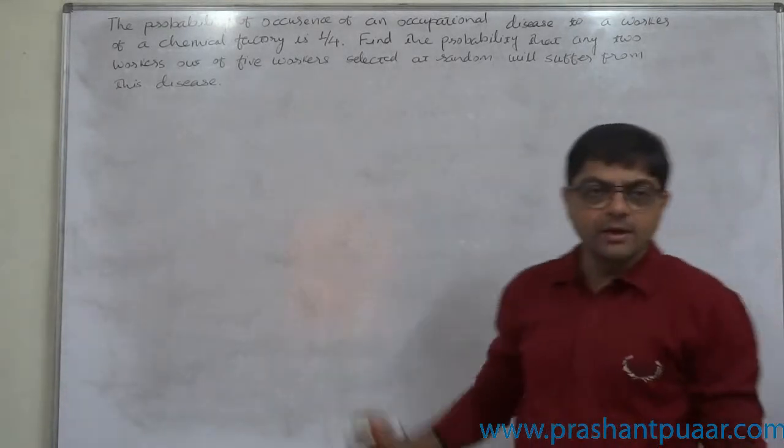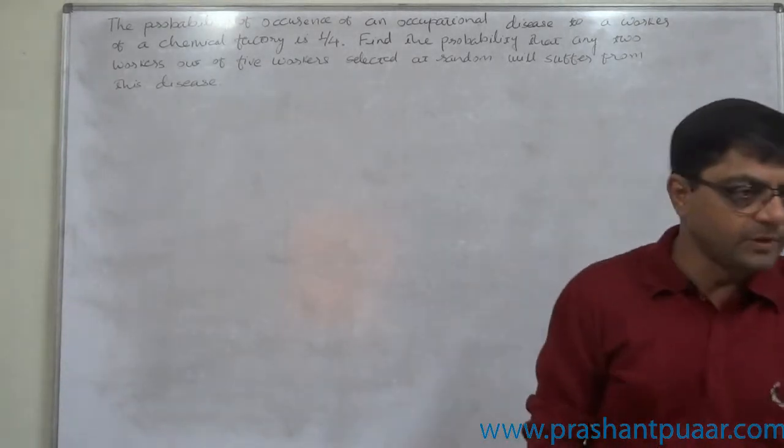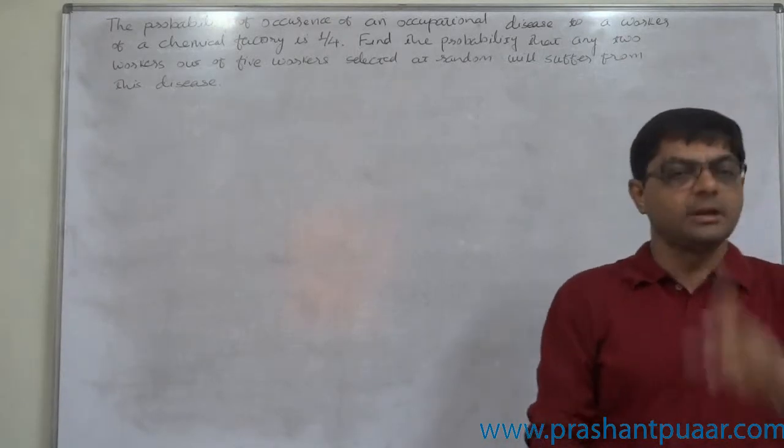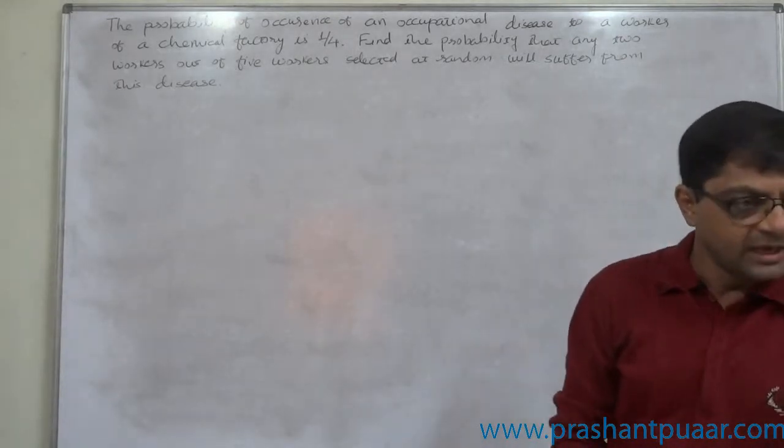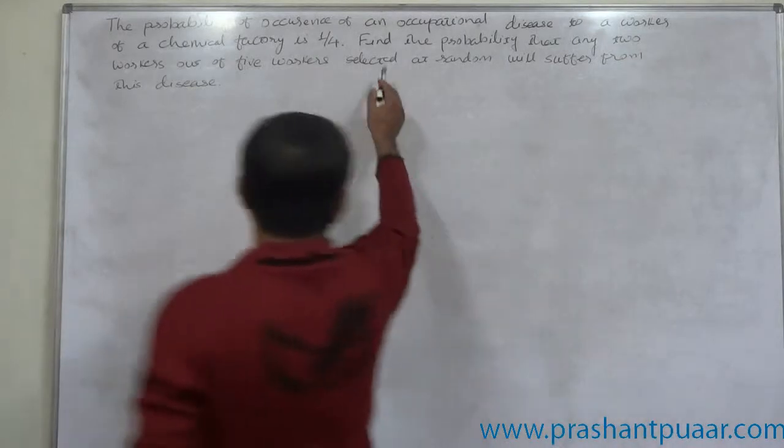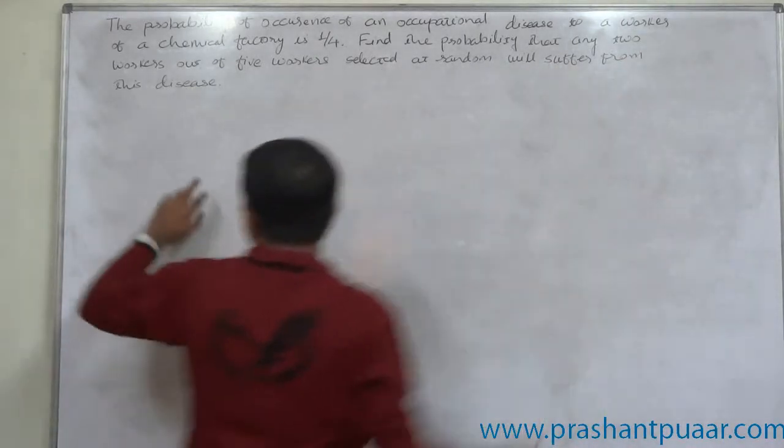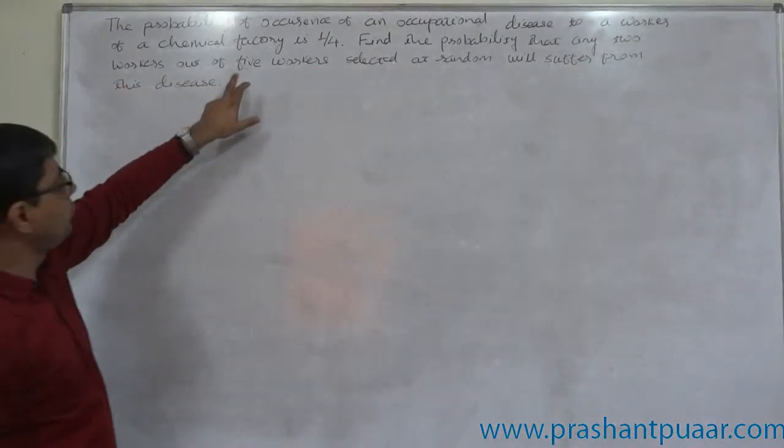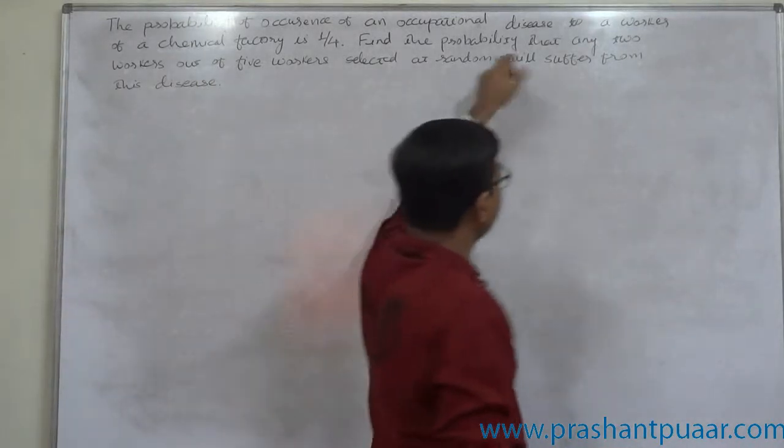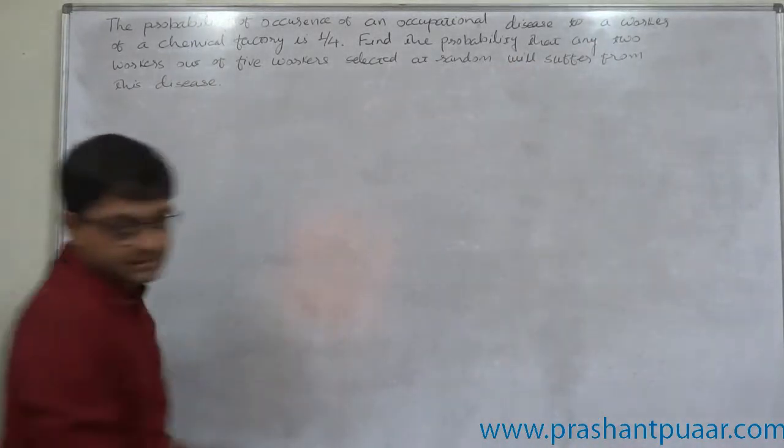So if any worker is selected at random from the factory, the probability remains 1 by 4. That means it remains constant for each and every worker. Find the probability that any 2 workers out of 5 workers selected at random will suffer from this disease.